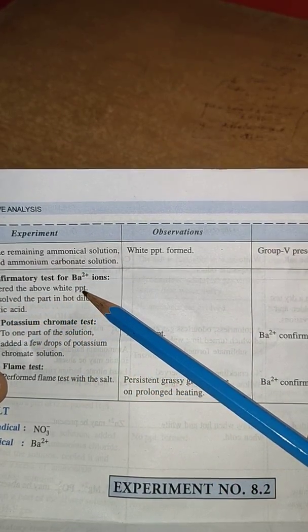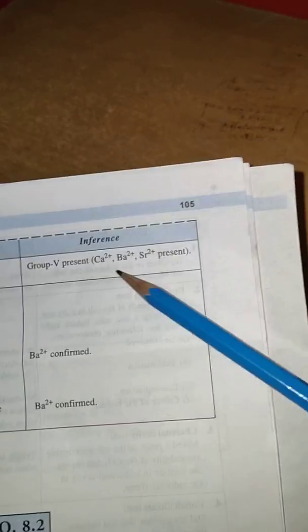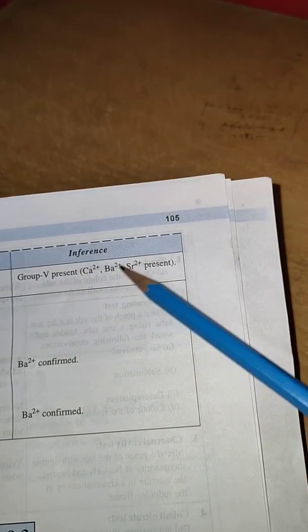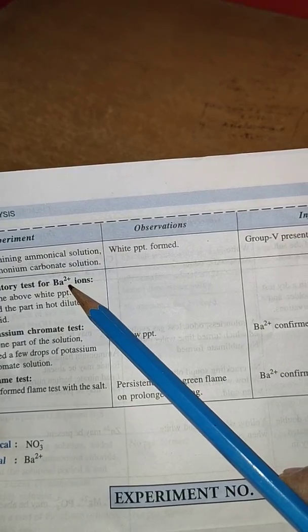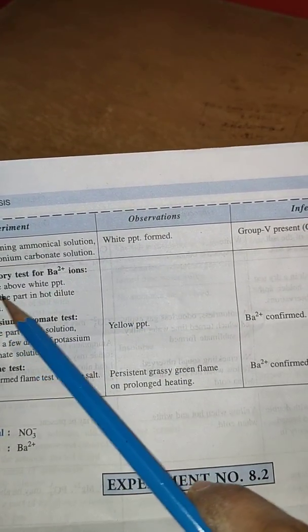To confirm, test for Ba²⁺: filter the above white precipitate. This test is for Ca²⁺, Ba²⁺, and Sr²⁺, but to confirm it's for Ba²⁺ because calcium and strontium are not present in the given salt. Confirmatory test: filter the white precipitate, dissolve it in hot dilute acetic acid for potassium chromate test.